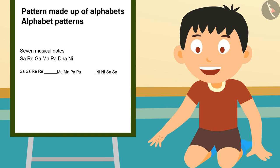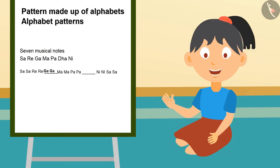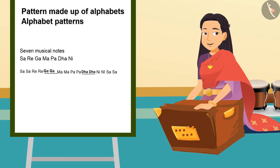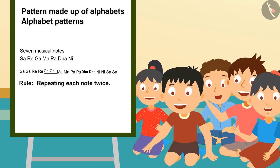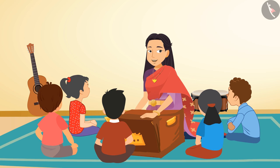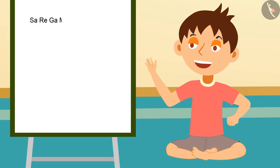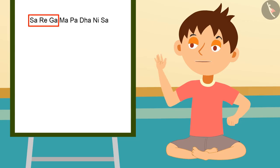After Re Re will come Ga Ga; after Pa Pa will come Dha Dha. Oh wow, you have done it so quickly! Is there any rule in this pattern? Yes — we are repeating each note twice. Come, let us all sing this together!